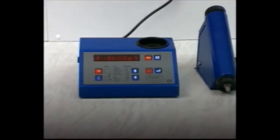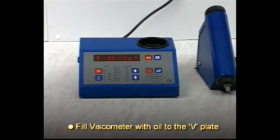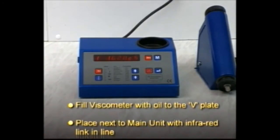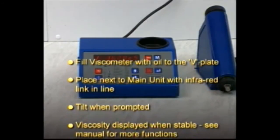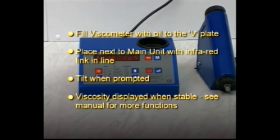To summarize, fill the viscometer with oil to the V-plate. Place it next to the main unit with the infrared link in line. Tilt when prompted. Viscosity displayed when stable. See your manual for more functions.